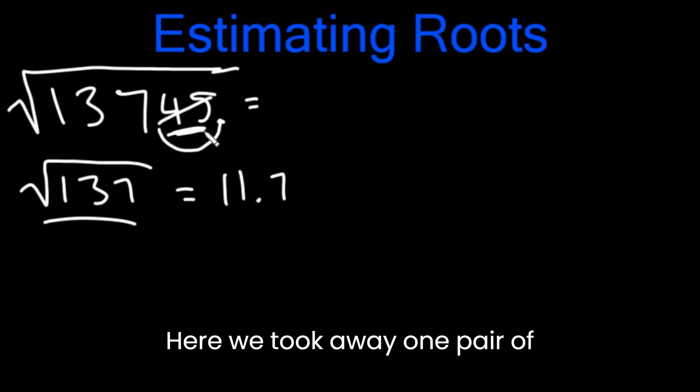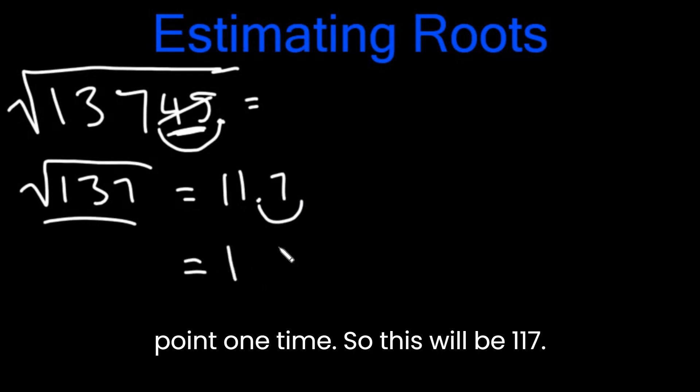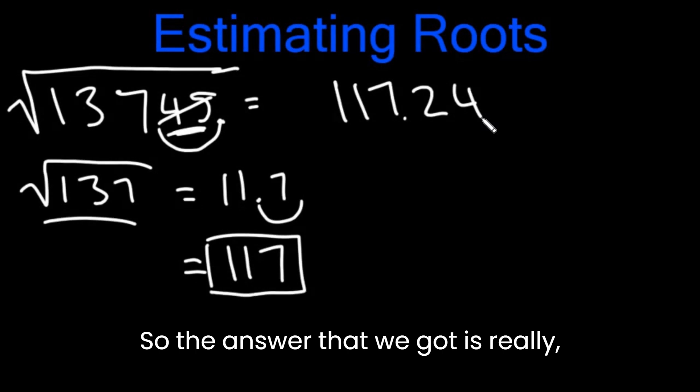Here we took away one pair of numbers, so we're going to move the decimal point one time. So this will be 117. Now if you were wondering, the actual square root of 13745 is 117.24. So the answer that we got is really, really close.